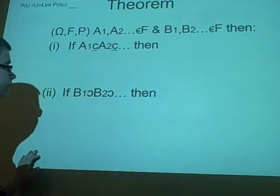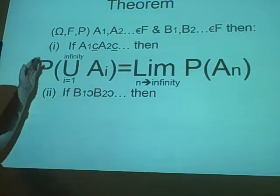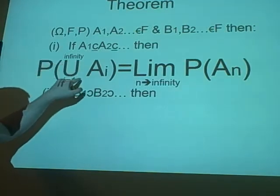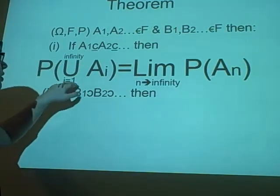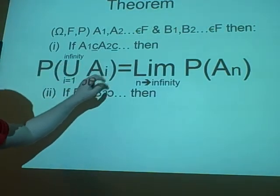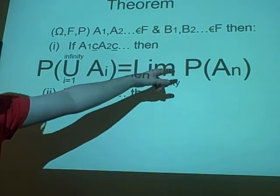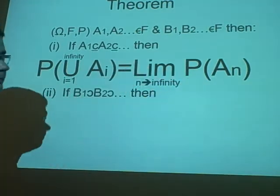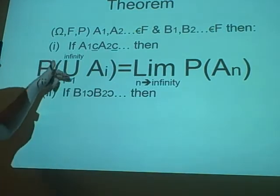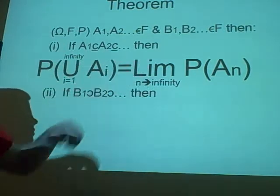then we can say that the probability of U, union, from I is 1 to infinity of AI is the same as saying the limit from N to infinity of A, the probability of A N. We can say this because it's going all the way up, and they're all subsets.